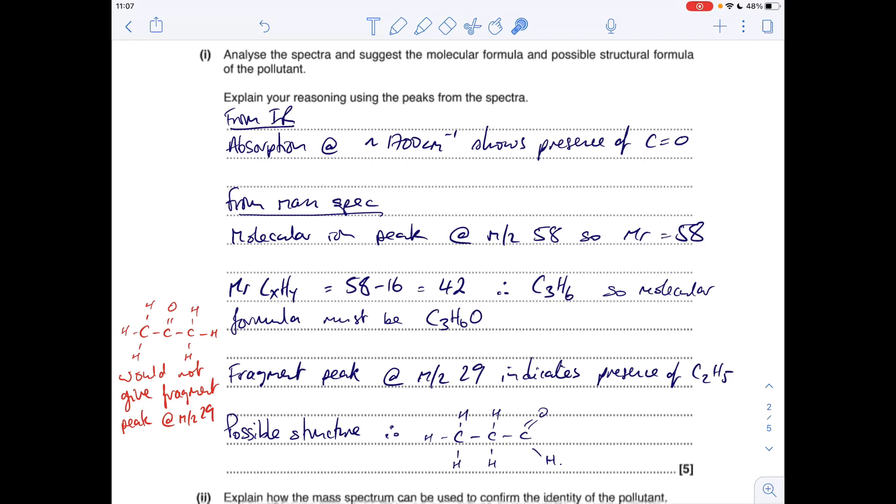We've got a fragment peak at M over Z 29, so that indicates the presence of a C2H5 group, an ethyl group. So the possible structure is there for this molecule here, so that's obviously propanal. And I've just written at the side there it can't be propanone even though that's got the same MR of 58, it would show the C double bond O in the infrared spectrum, but it wouldn't give a fragment at 29 M over Z 29.